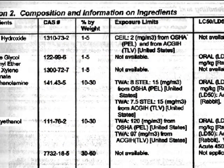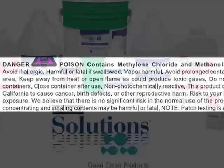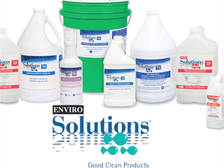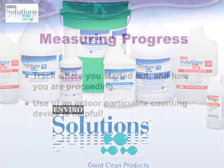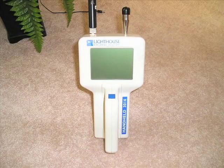We need to replace volatile and VOC-laden chemicals with non-volatile, zero-VOC products, replace toxic and noxious chemicals with non-toxic chemicals, and dispose of used cleaning solutions immediately. Measuring your progress is important — track where you started and how you are proceeding, using an indoor particulate counting device.